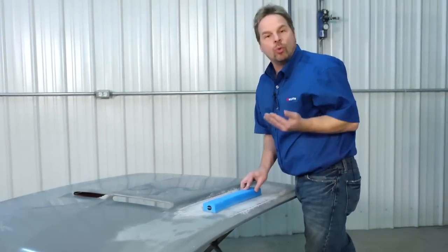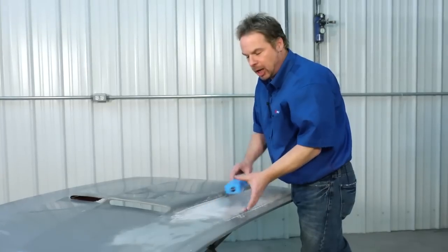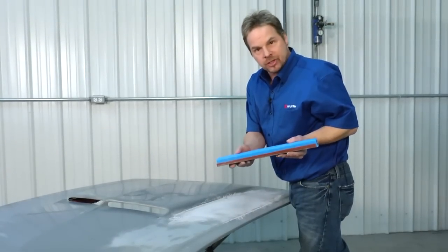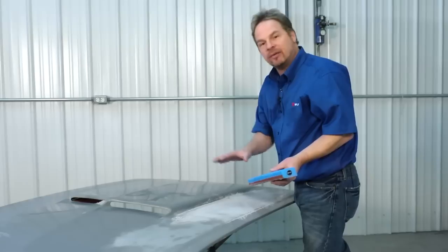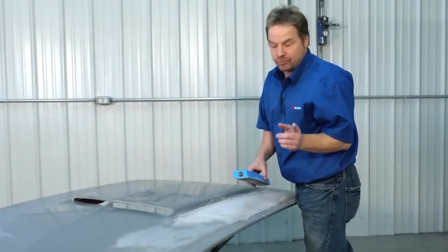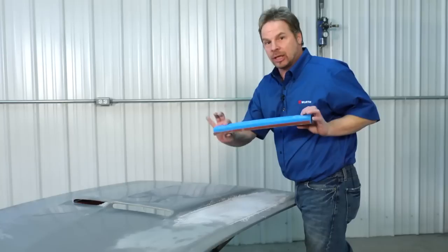Now with the sander like this, with one piece of paper on one side of the block, it still retains a little bit of flexibility, which is nice because not every panel is like a refrigerator. A lot of them have contours. However, if you want a lot of rigidity with a lightweight block, there's a couple different ways to do it.